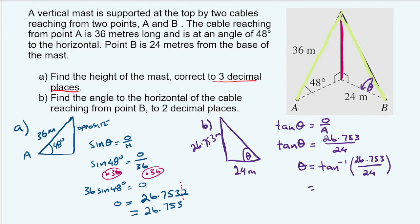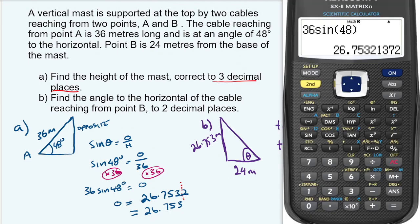We work that into our calculator. Let's do that one. So we want second function tan. It's not the one we want. Second function tan, we want the one with the minus one. And we want our fraction, so we want 26.753. Make sure you press your buttons properly. There we go. Over 24. I'm going to close off my brackets and I get 48.1048.